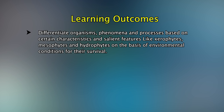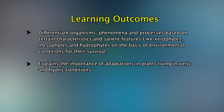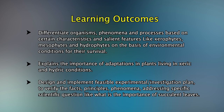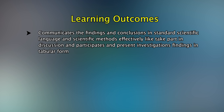On successful completion of this experiment, the learner will be able to differentiate organisms, phenomena and processes based on certain characteristics and salient features — like xerophytes, mesophytes and hydrophytes — on the basis of environmental conditions for their survival. They will explain the importance of adaptation in plants living in xeric and hydric conditions, and design and implement feasible experimental or investigation plans to verify facts, principles and phenomena, addressing specific scientific questions like the importance of succulent leaves for xerophytic plants and the role of aerenchyma in hydrophytes.